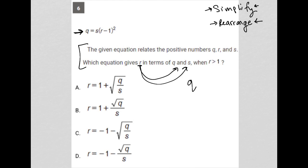So I'm going to take my original equation Q equals S(R minus one) squared, and I'm going to isolate R. I'm going to start off by dividing both sides by S. So I have Q over S equals R minus one squared.